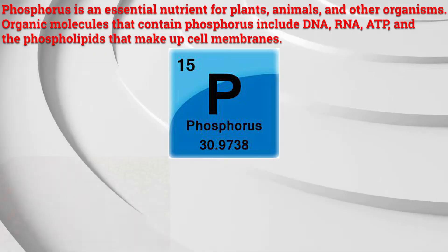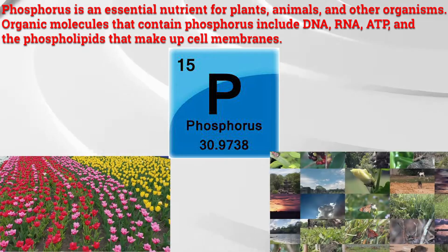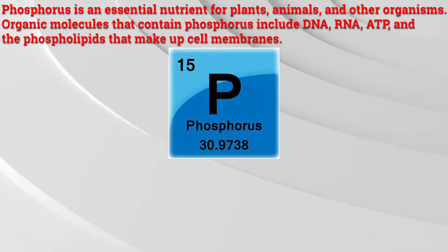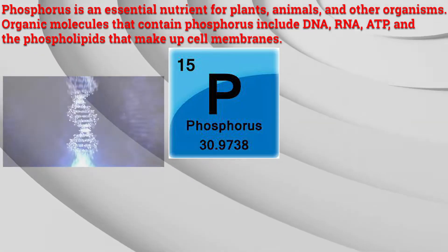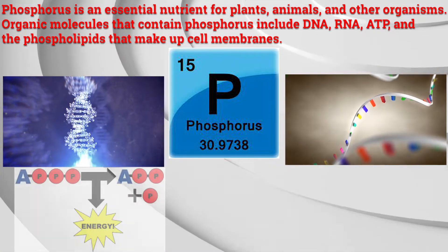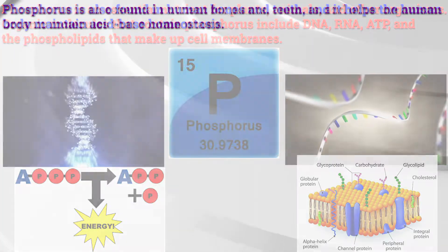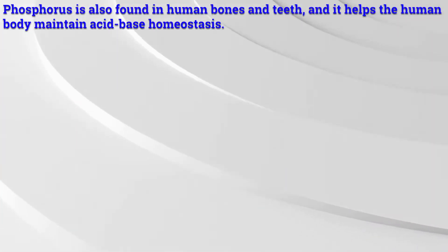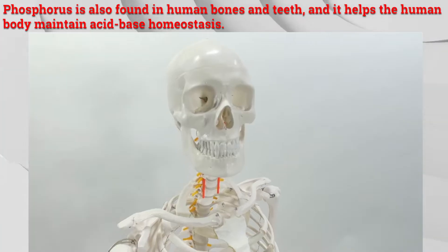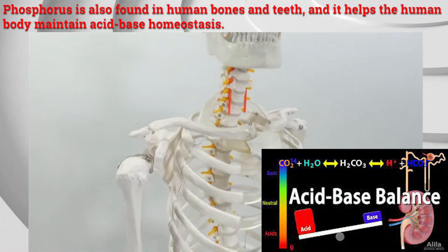Phosphorus is an essential nutrient for plants, animals, and other organisms. Organic molecules that contain phosphorus include DNA, RNA, ATP, and the phospholipids that make up cell membranes. Phosphorus is also found in human bones and teeth, and it helps the human body maintain acid-base homeostasis.